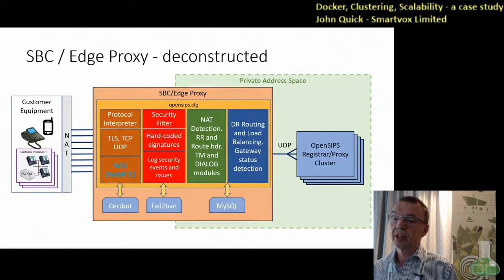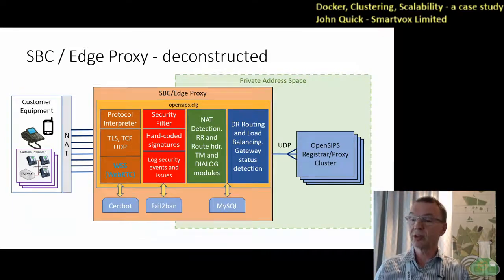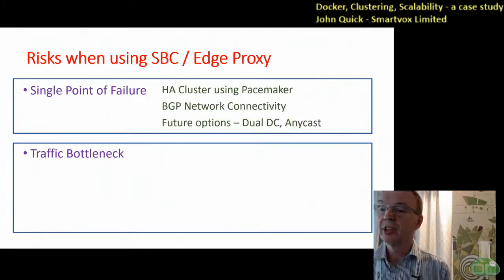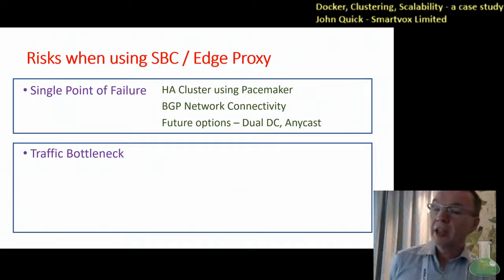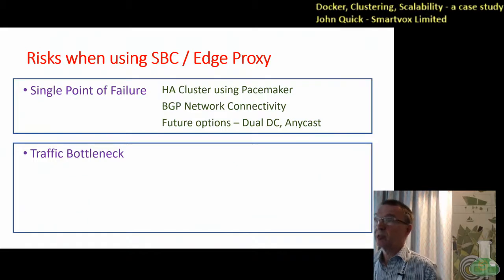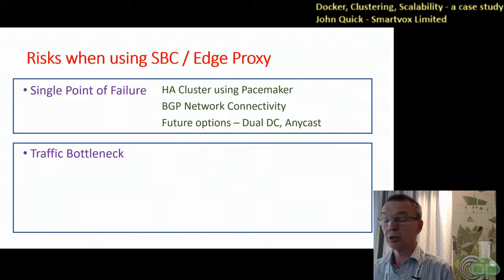The edge server handles record route headers and route headers. It's got the TM module and the dialog module, and it does a bit of load balancing to distribute to the cluster of registrar proxies. The risks of using an edge proxy like that include the single point of failure. So I wanted it to be part of a high availability cluster, and for that I was using Pacemaker, which I've done some testing with. Tim and Invoxio were providing the infrastructure, which had BGP network connectivity, so there was some failsafe there. Future options include going for a dual data center and maybe looking at Anycast as well.